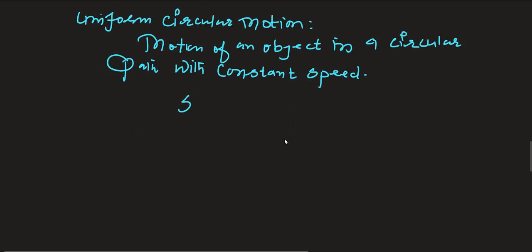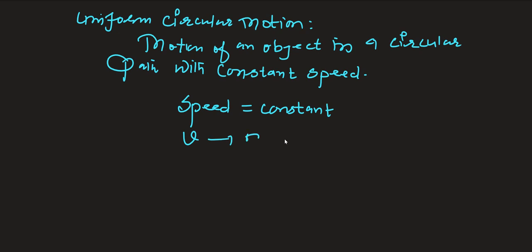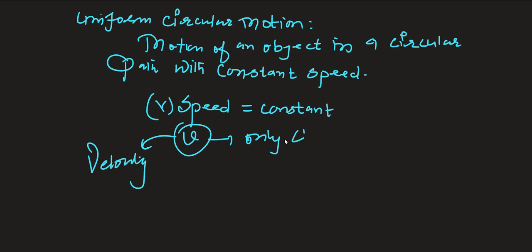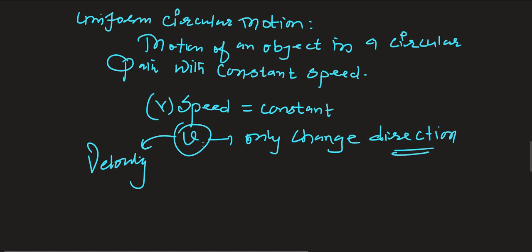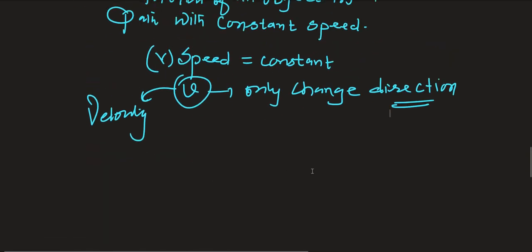Speed is constant at every point. Even velocity is constant but it changes only direction — this is velocity basically, and this is the speed. What is uniform circular motion? Motion of the object in which the object is moving with uniform speed in a circular path — that is called uniform circular motion.